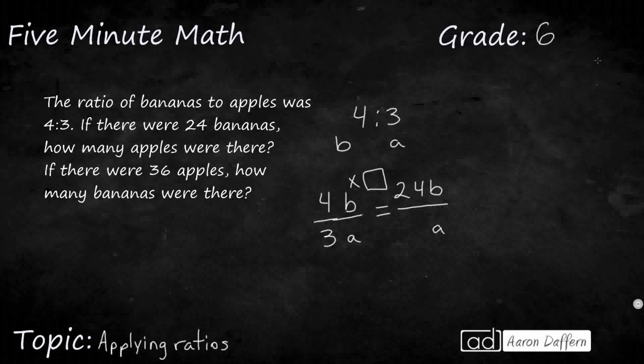So 4 times what gets me 24? So hopefully that's a basic fact. We think, oh, 4 times 6. Well, that means that to make an equivalent fraction, to keep this proportion going, I need to multiply my denominator by 6. So I've got 6 times 3, that's 18. So 24 over 18, that reduces down to 4 over 3, which is my initial ratio, which means for this first one...